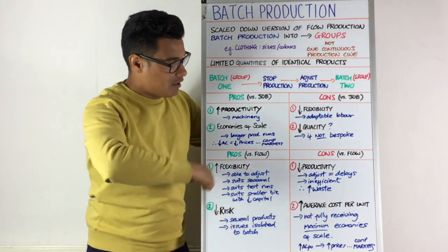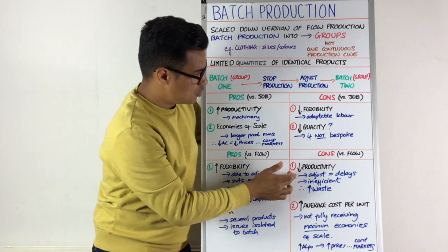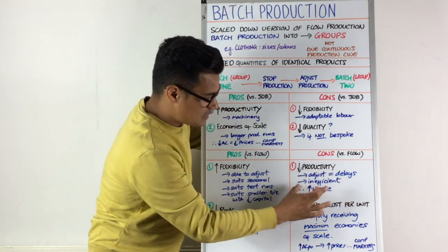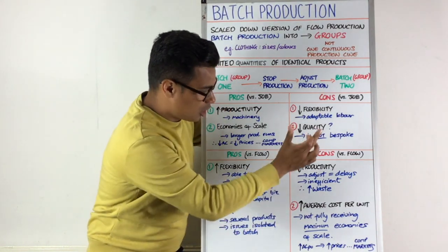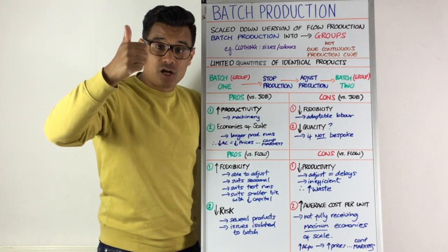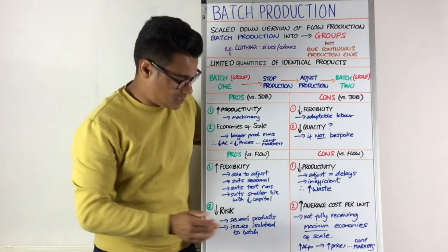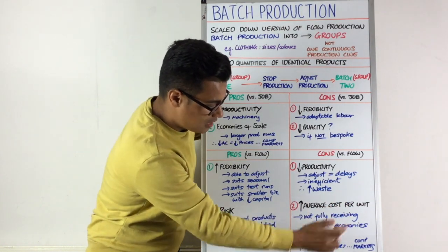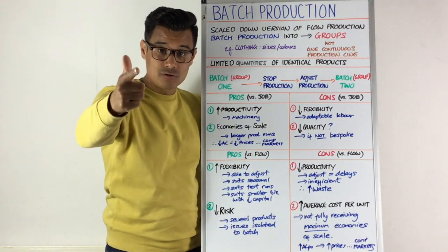However, flow production can be better than batch production. With batch production you're likely to be less productive because of the constant stopping and adjusting of the production line, which wastes time, causes delays, is inefficient, and may lead to increased waste. Also, with flow production you can really maximise purchasing economies of scale, so with batch production versus flow production you're going to have a higher average cost per unit — and therefore higher prices — meaning you'll be less competitive in markets. I hope that helps on batch production and I'll see you at the next video.